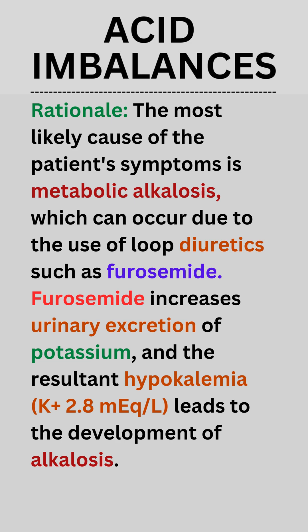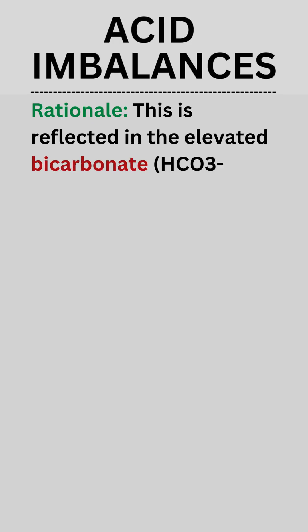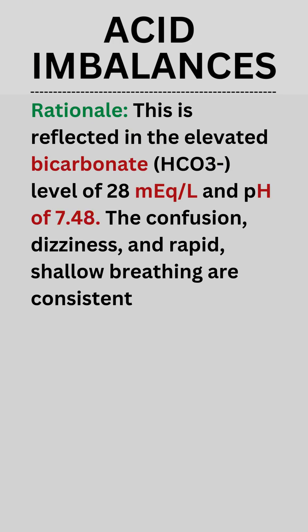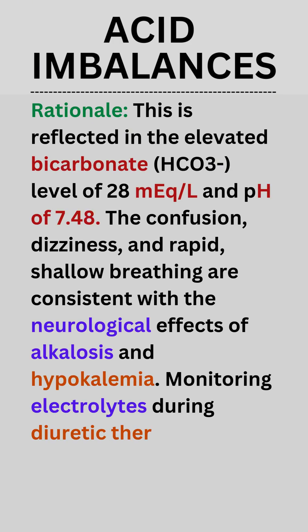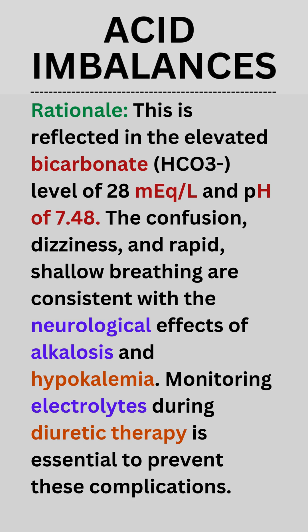Furosemide increases urinary excretion of potassium, and the resultant hypokalemia (K+ 2.8 mEq/L) leads to the development of alkalosis. This is reflected in the elevated bicarbonate (HCO3) level of 28 mEq/L and pH of 7.48.